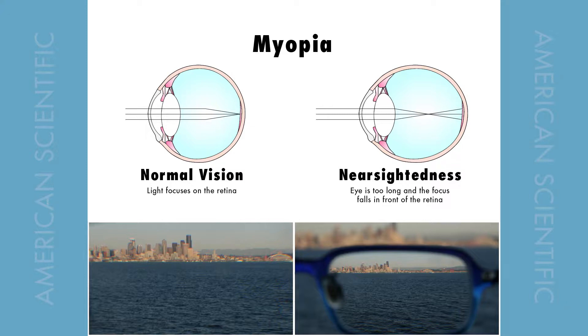Our eyes sometimes interpret light differently than others, due to either a differently shaped eyeball or lens. For individuals with nearsightedness, the focus of light falls short and does not reach the retina. The eye interprets far away objects as fuzzy or out of focus. This type of eye condition is also referred to as myopia.